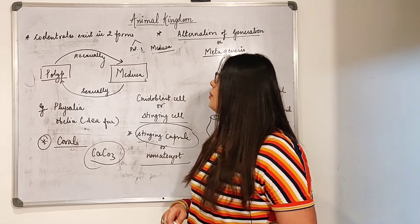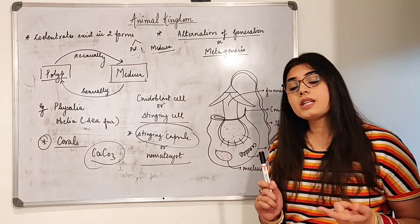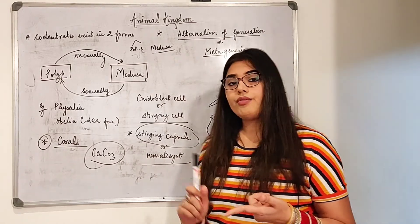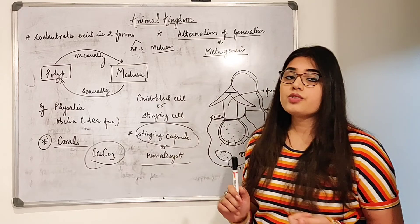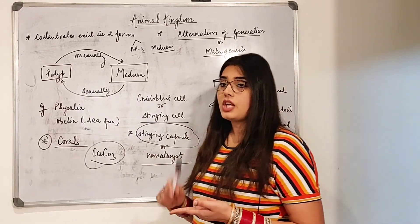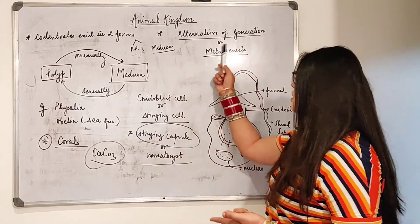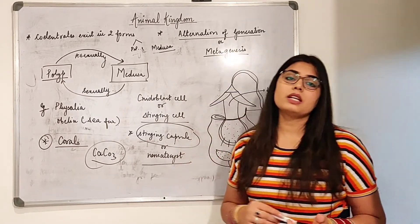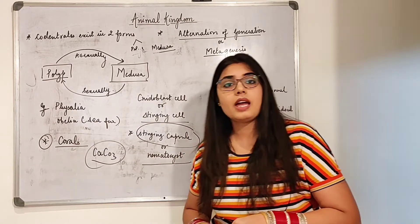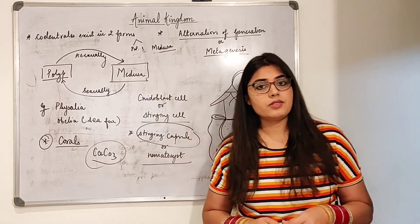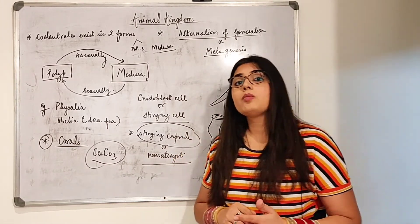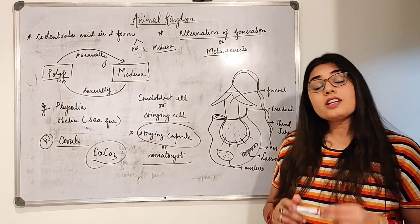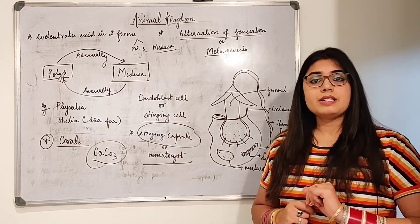In this video we have studied: the two forms — polyp and medusa — of Cnidaria, their differences and structures, metagenesis or alternation of generation with examples, the nidoblast cells including nematocysts, stinging capsules and stinging cells, and finally coral reefs. For any doubts, put them in the comment section, and stay tuned for the next video.